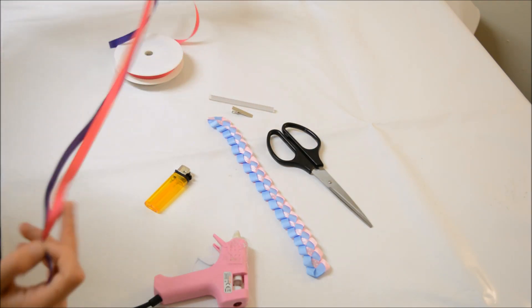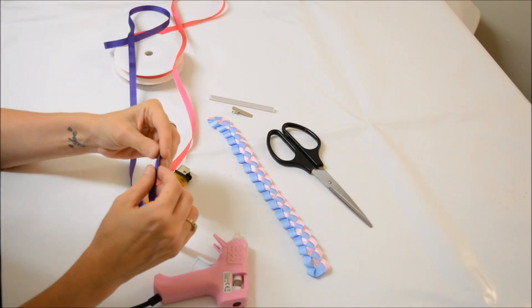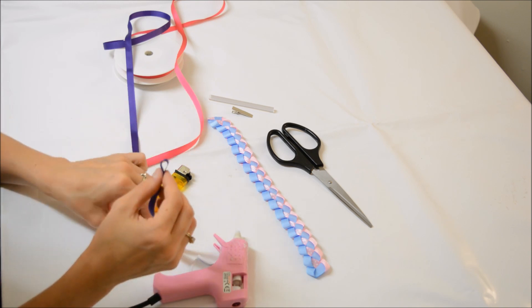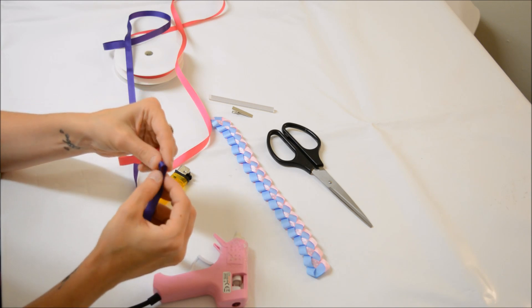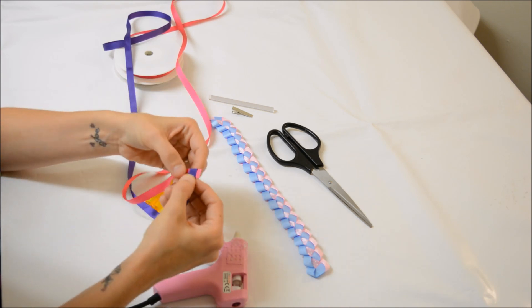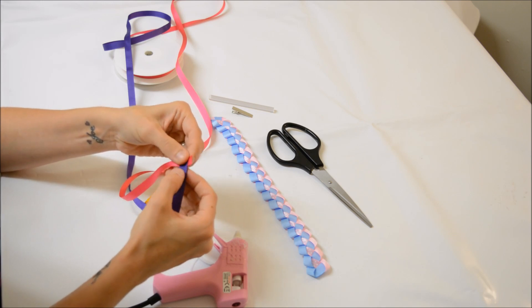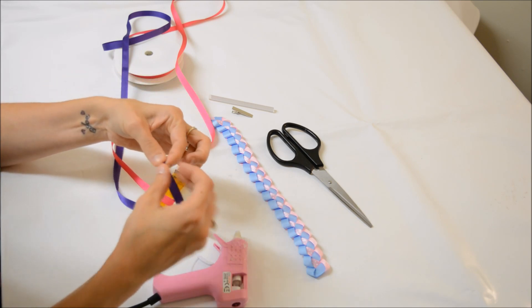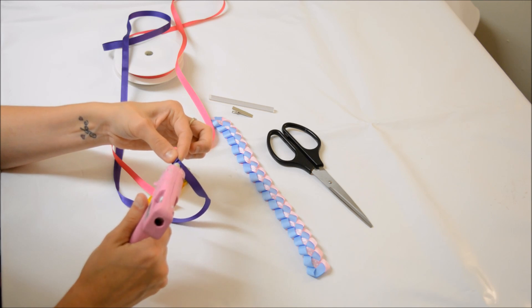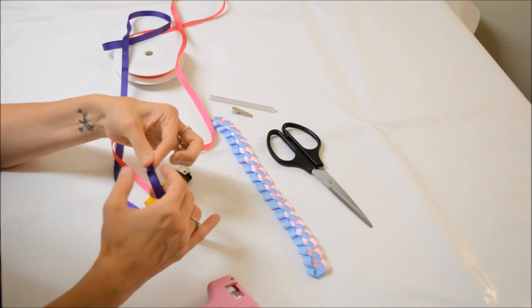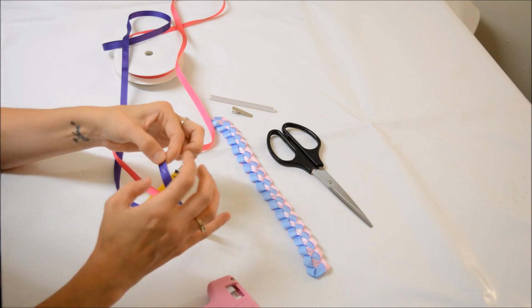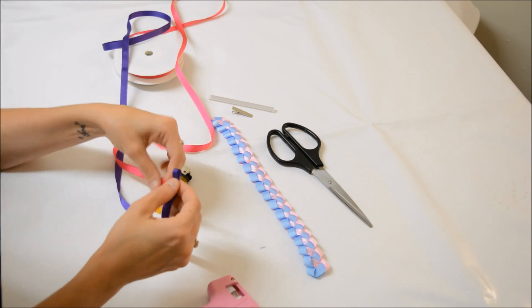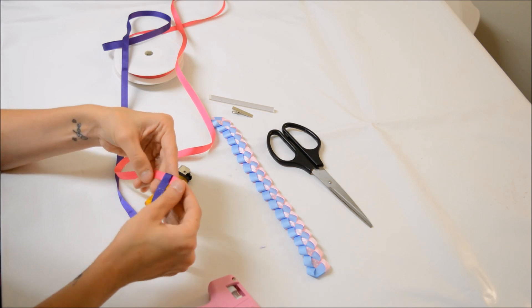So first of all what you want to do is take the ends of your first ribbon and fold it down about half an inch. Now what you want to do is make sure that you can get your other piece of ribbon to slide through. So when you've figured out where that is, just pop a little bit of glue and squeeze that bit down. Just make sure that your ribbon goes through.